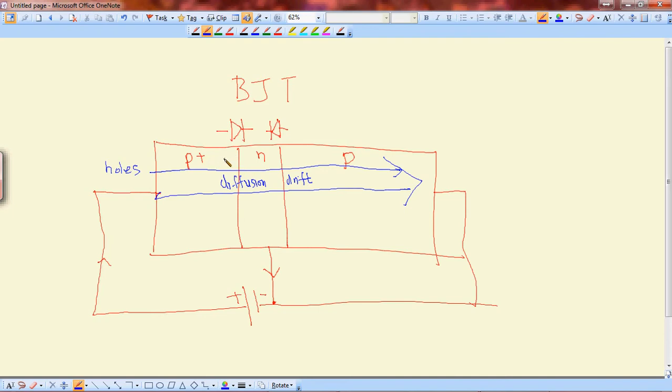So P plus, the holes in P plus diffuses here. So there is a concentration of P here which is really high at this edge. Here is just P. So the P here will drift from here to here. So that's how it works.